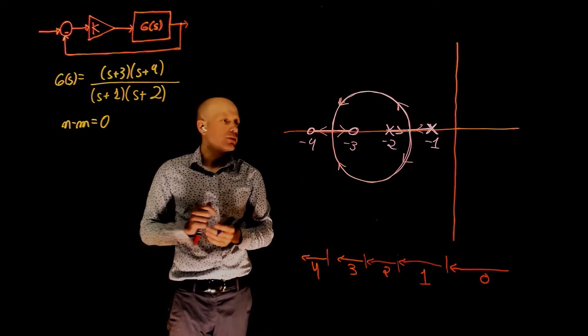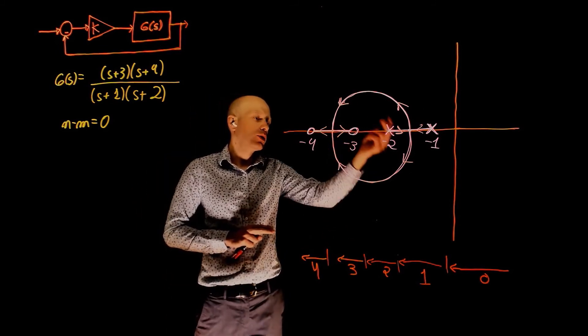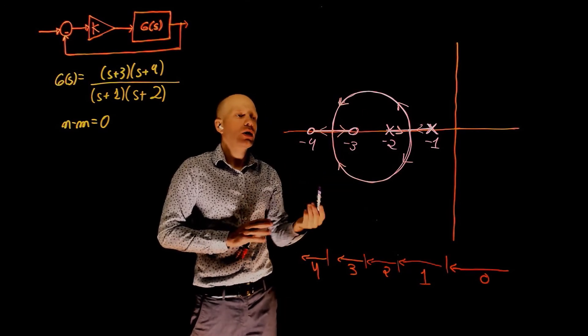And this is the root locus for this closed loop system. Now is this more like a novel shape or a circle? It doesn't really matter.